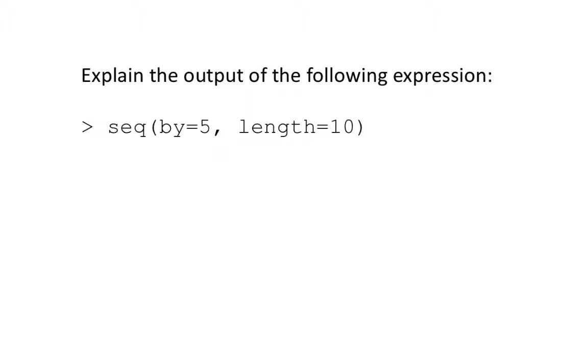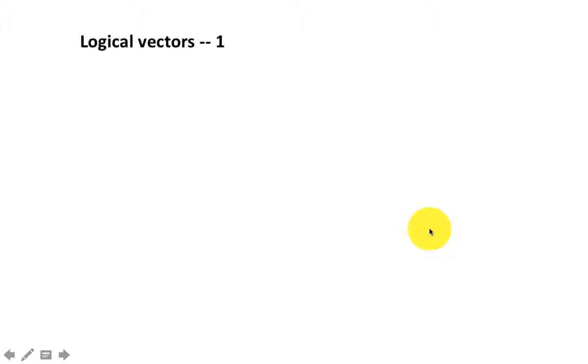Explain the output of the following expression: seq(by=5, length=10). We have not specified the starting value. So if you don't specify the starting value, R is going to treat it as 1. So it's going to do 1 and then increase by 5: 1, 6, 11, et cetera. And it's going to give you 10 results overall.